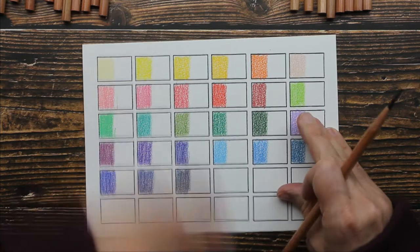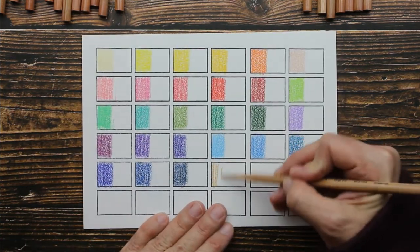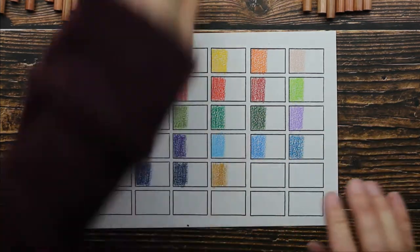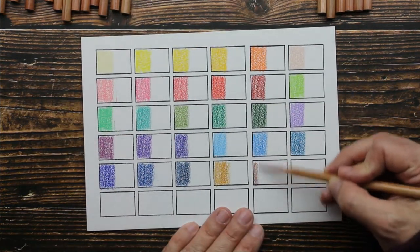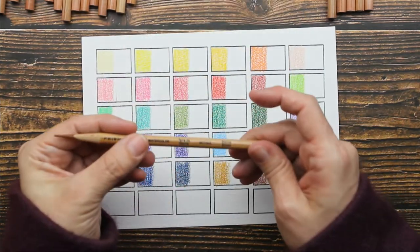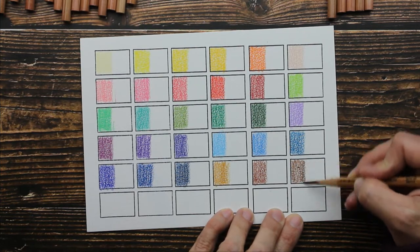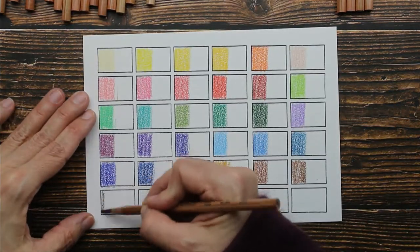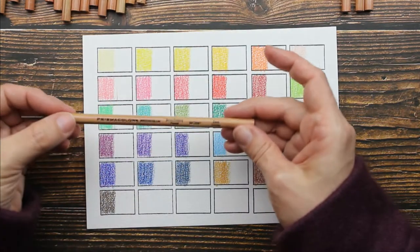These are kind of crumbly, so you'll see me do that every now and again. We have Golden Rod. And then we have Terra Cotta. Next color is called Sienna Brown. Next is Dark Brown. Dark Umber.